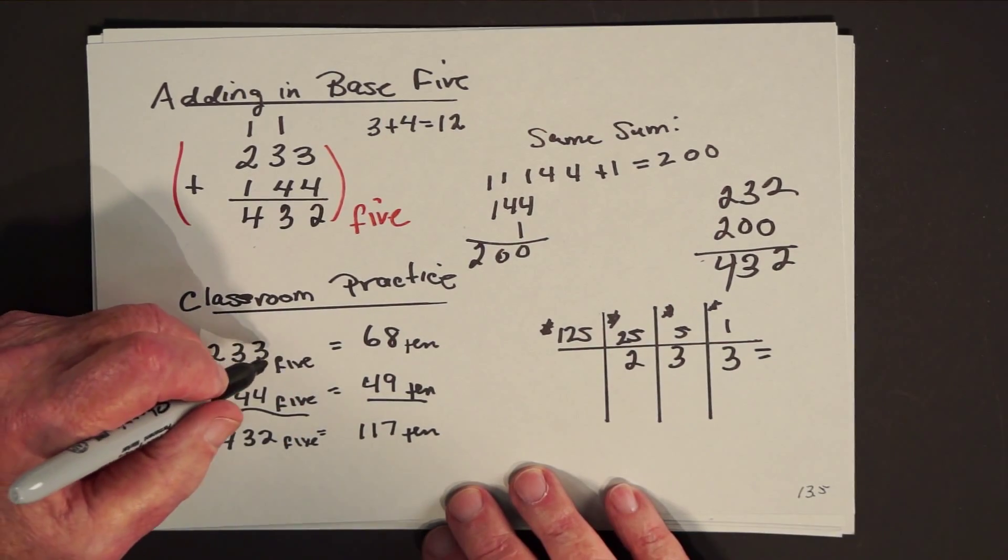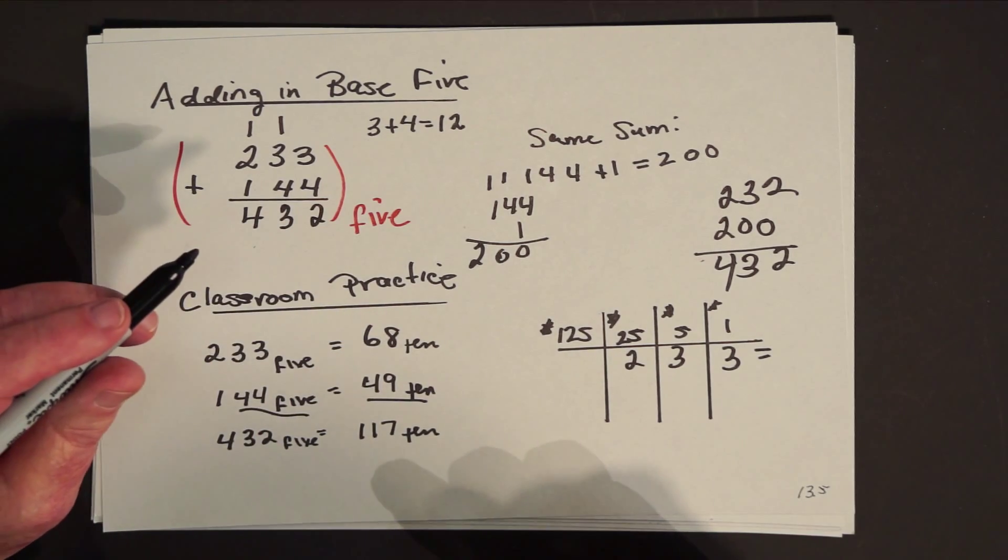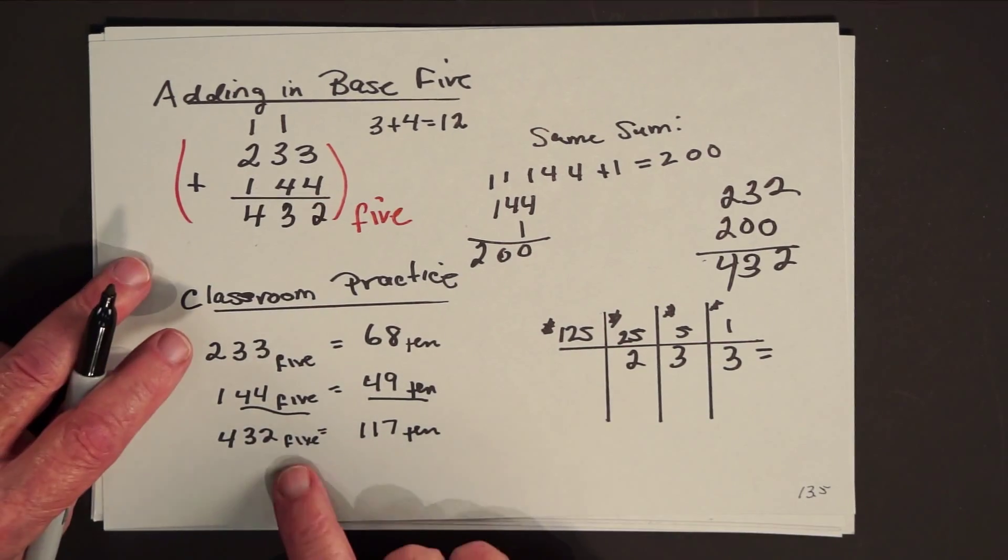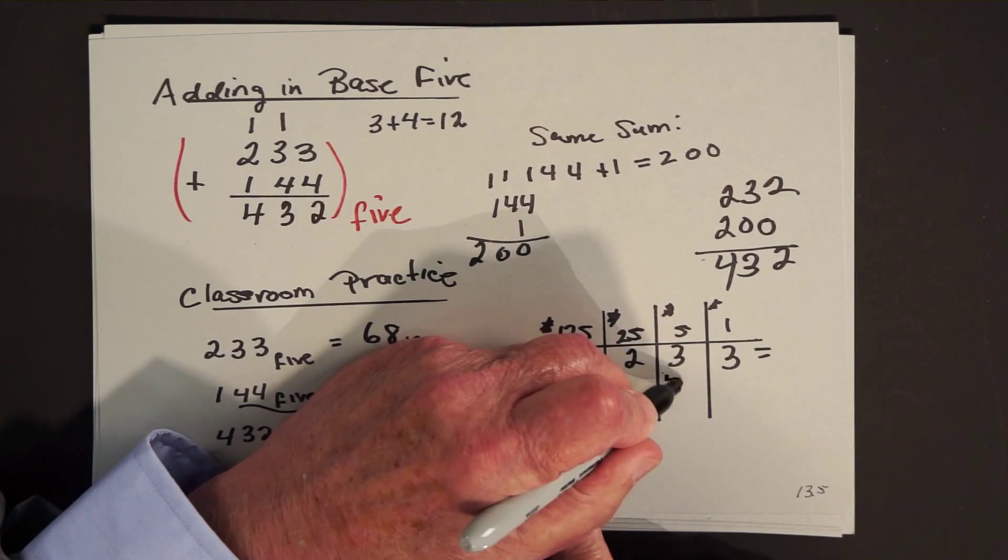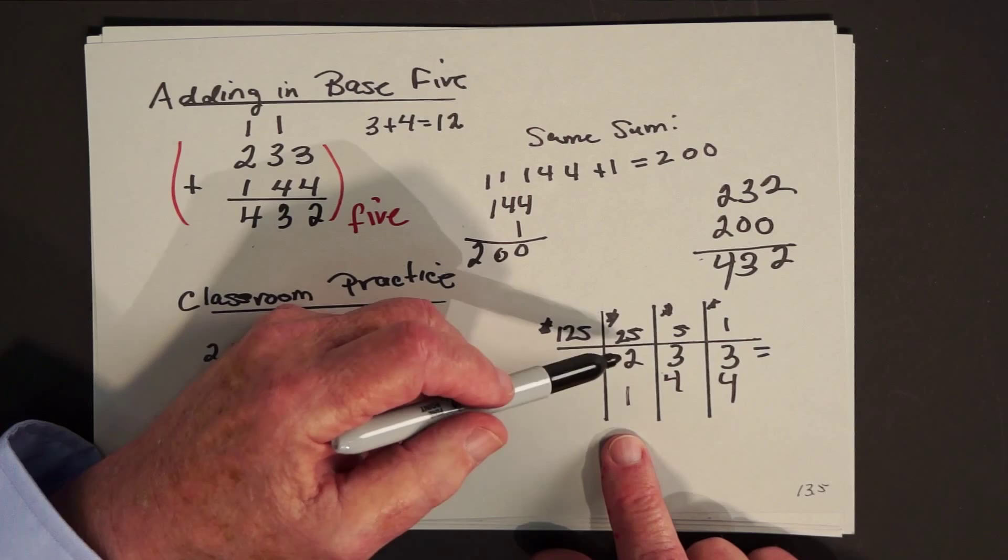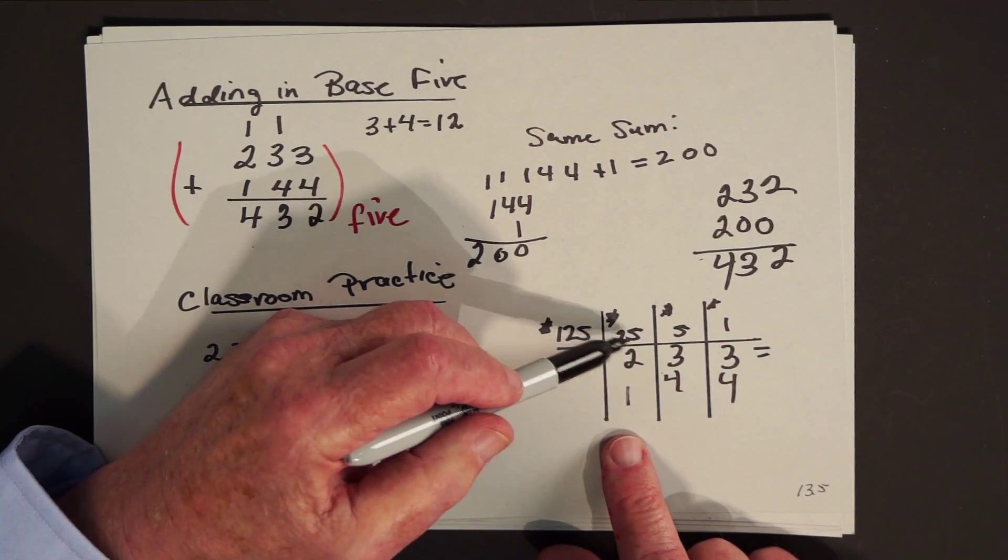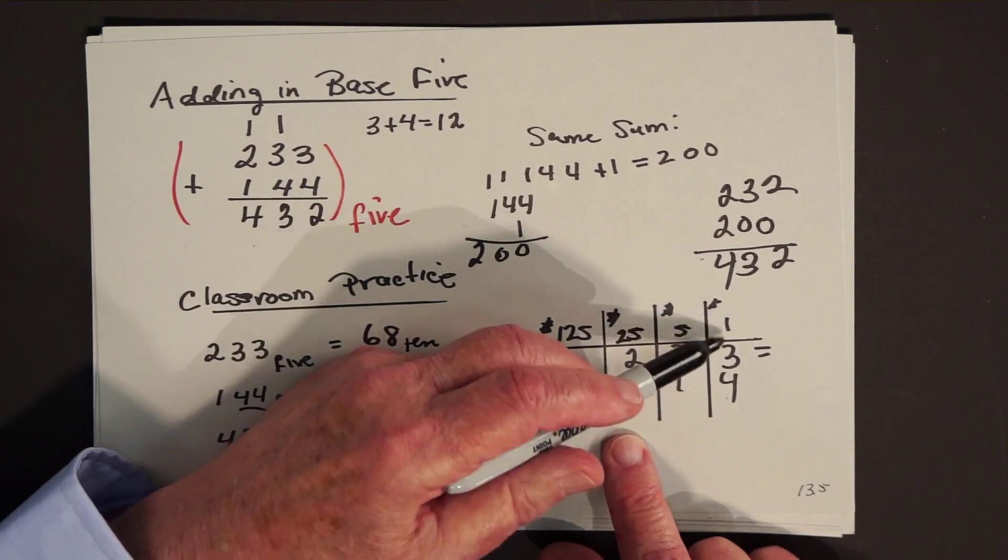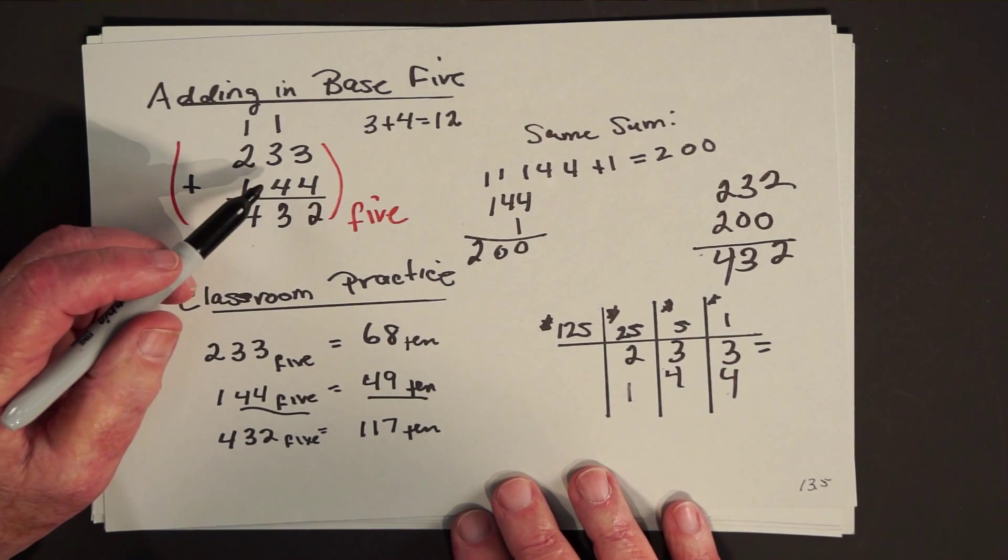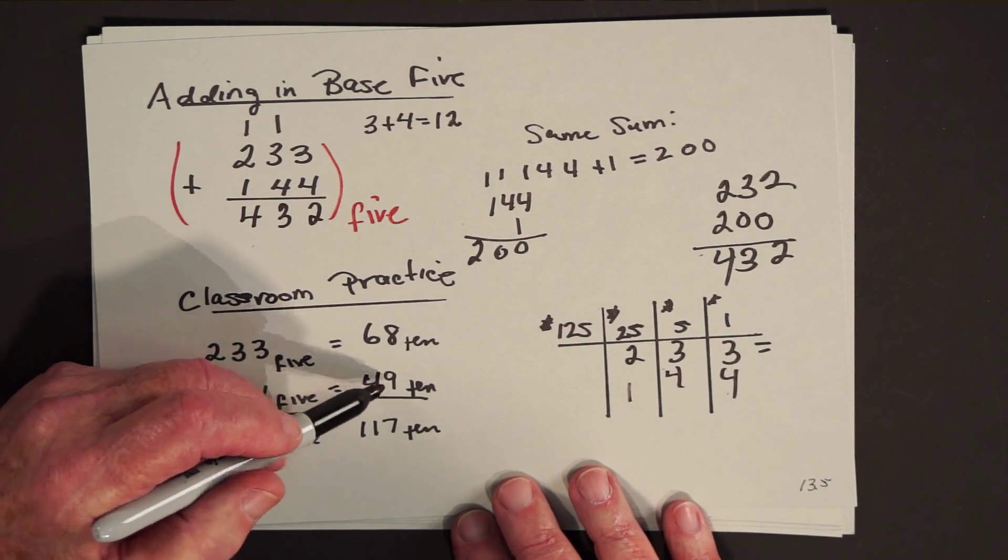So two, three, three in base five names the same number as six, eight names in base ten. What does one, four, four represent? One, four, four means you have one twenty-five, that's twenty-five, and four times five is twenty, twenty-five and twenty is forty-five, and four ones makes forty-nine. So adding this problem in base five is the same as adding sixty-eight and forty-nine in base ten.